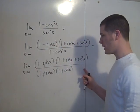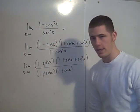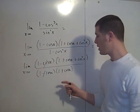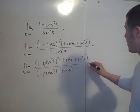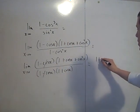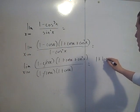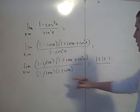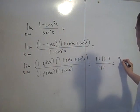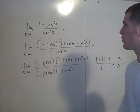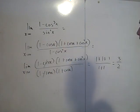At this point you can substitute 0 in, because the cosine of 0 is 1. Substituting gives 1 plus 1 plus 1 squared, all over 1 plus 1, which is 3 over 2. So the limit as x goes to 0 of 1 minus cosine cubed x over sine squared x is 3 over 2.